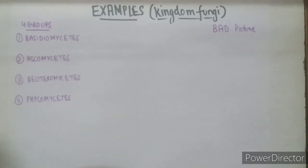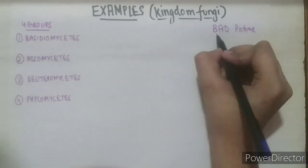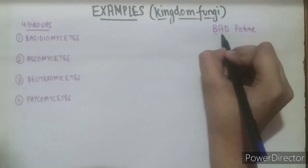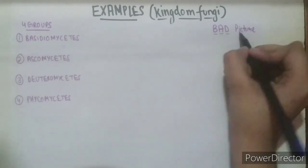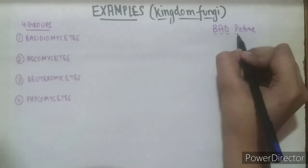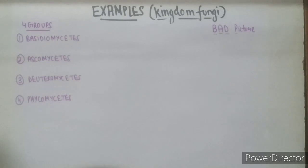Firstly, the trick to learn the 4 major groups is 'bad picture': B for Basidiomycetes, A for Ascomycetes, D for Deuteromycetes, and P for Phycomycetes — about which I have explained in the previous video on Kingdom Fungi as well.